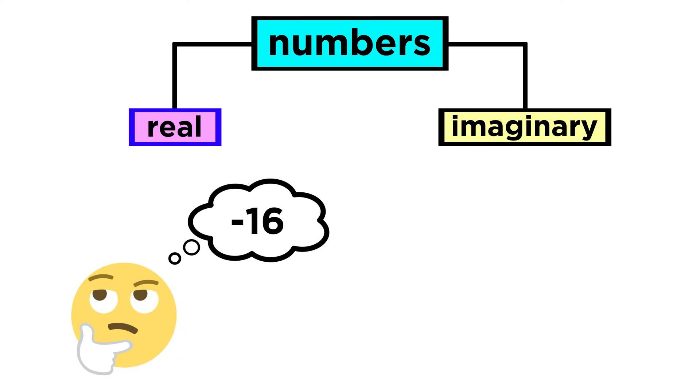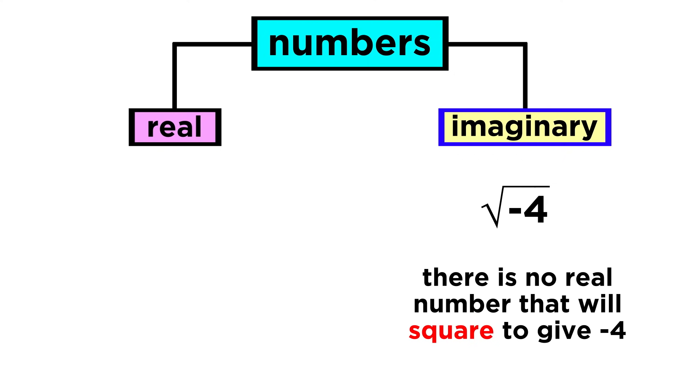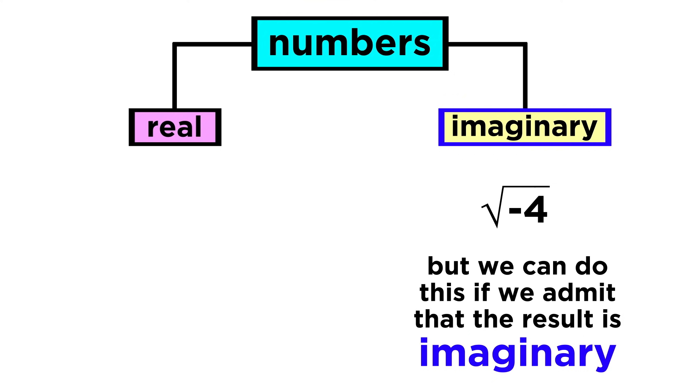Real numbers are probably still all the ones you were thinking of, so let's define imaginary numbers. Remember when we said that we can't take the square root of a negative number? In a certain sense, you can't, because there is no number that when squared will produce a negative number. However, in another sense, we can take the square root of a negative number if we admit that the result is imaginary.